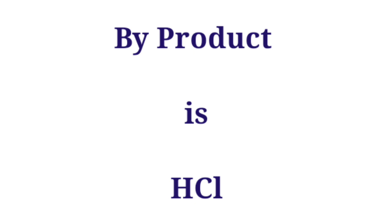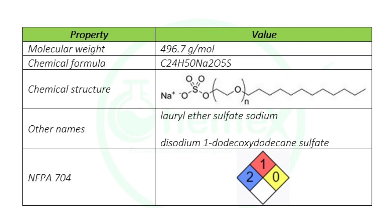In number two, neutralization, the sulfation product is fed to a neutralization vessel where it is combined with a 50 percent weight-by-weight caustic soda solution, along with processed water for adjusting its active component. The neutralization reaction is carried out at a temperature below 45 degrees Celsius, generating a 70 percent weight-by-weight sodium lauryl ether sulfate, which is further routed to packaging.